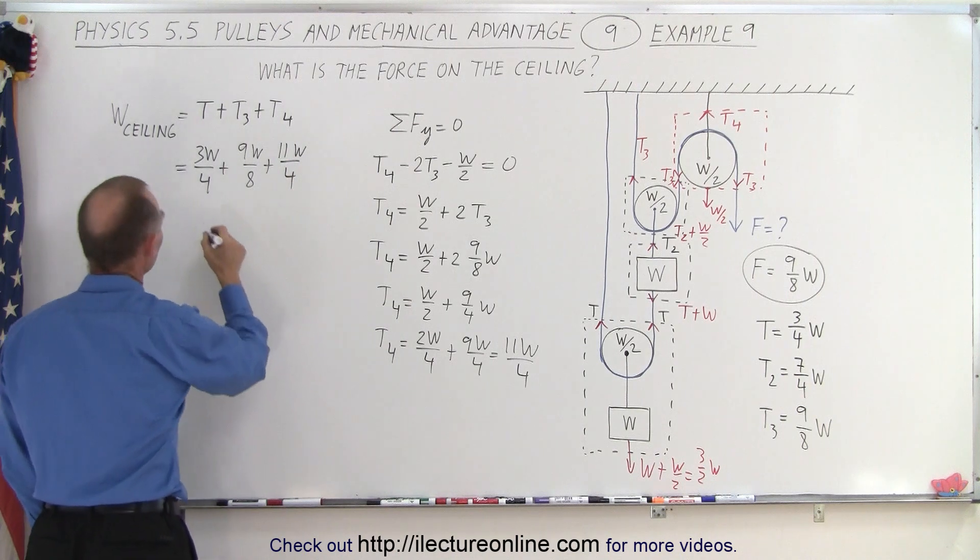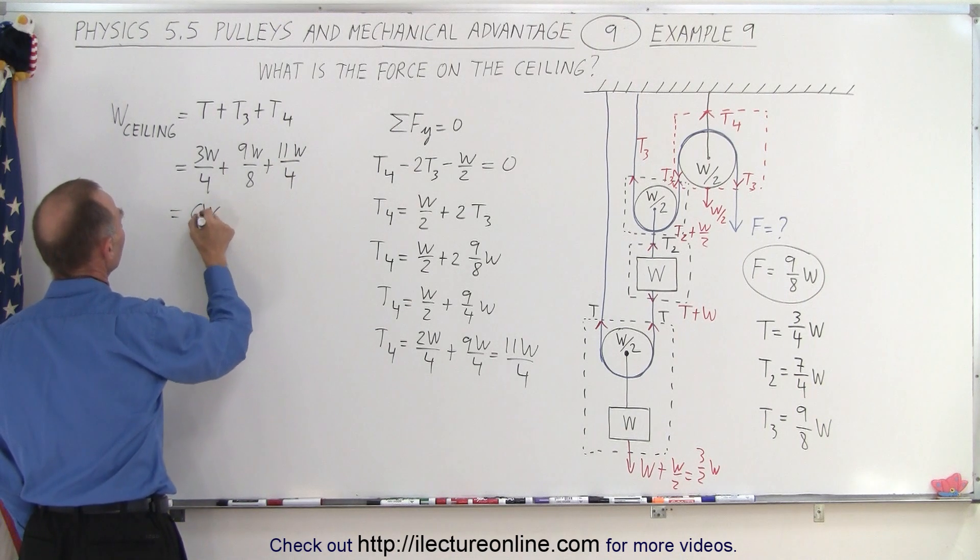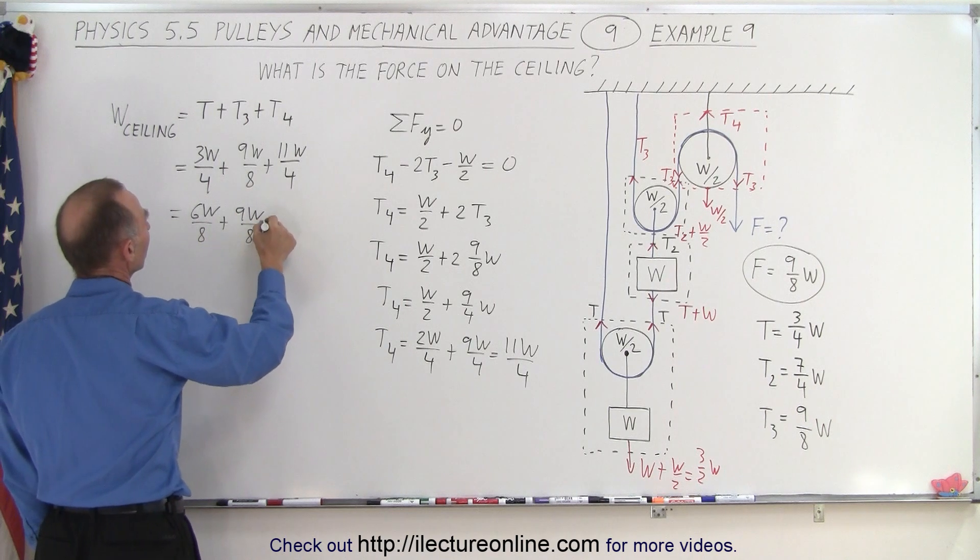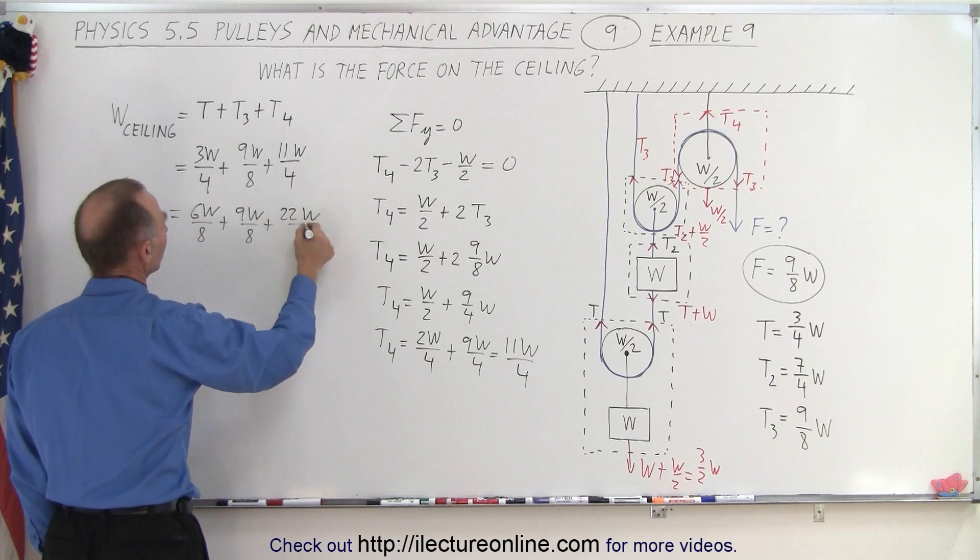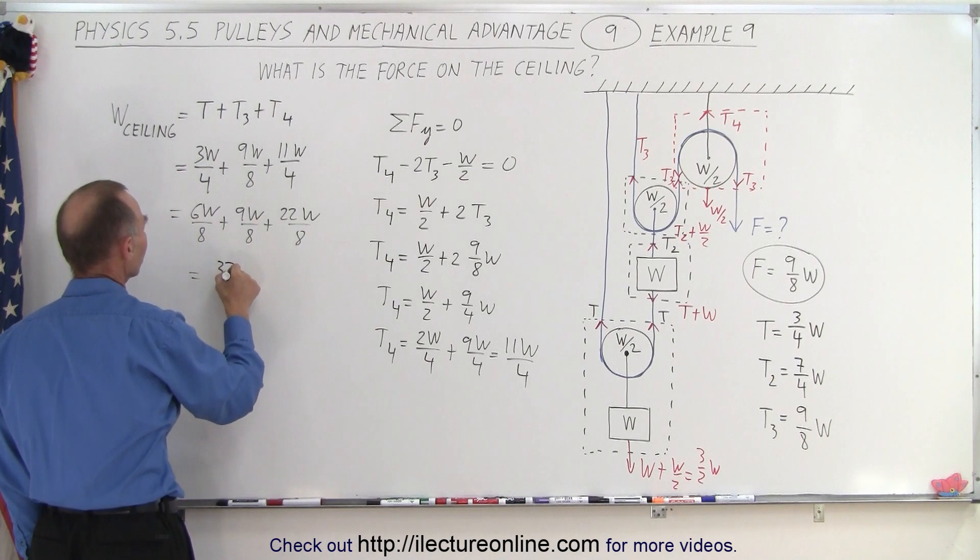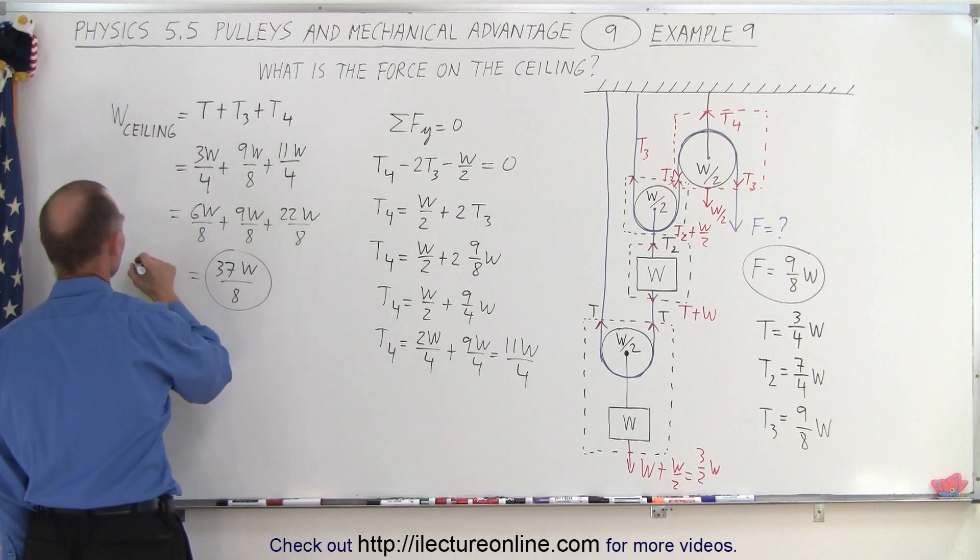Common denominator is 8, so that will be equal to 6W over 8, plus 9W over 8, plus 22W over 8. Add that together, that would be equal to 37W over 8. And so that is the weight on the ceiling.